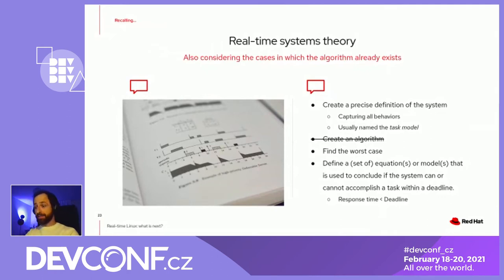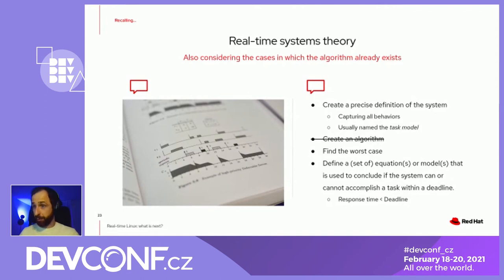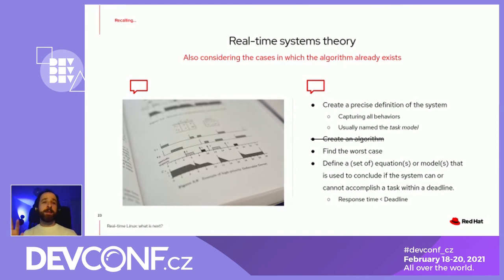Luckily, and that's something we also see on the application of other things for safety-critical — most of the kernel already works and the code is there. Many times we don't actually need to create an algorithm, but just analyze Linux with a new perspective. So yes, it's possible to try such an approach.